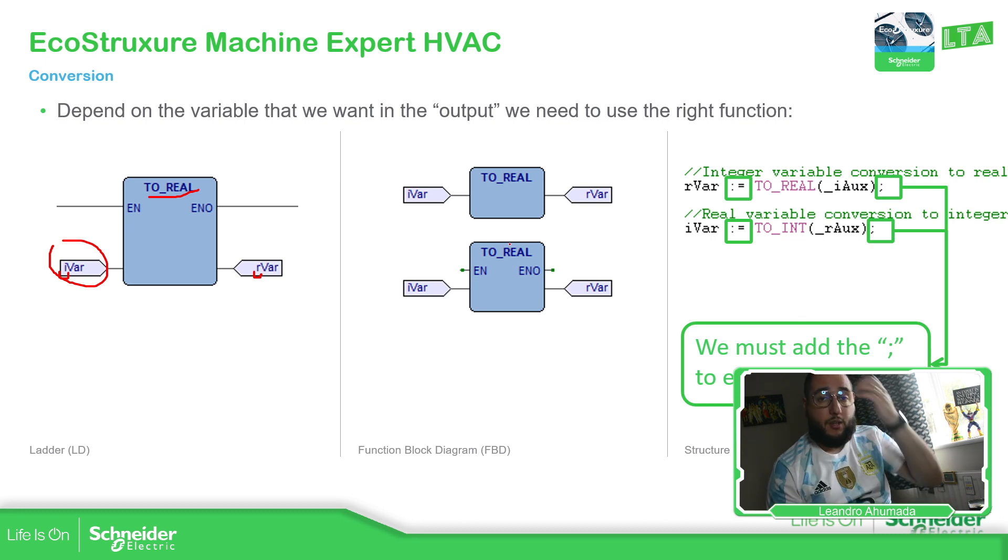For the FBD is similar. It's exactly the same as the ladder, but you have the possibility to use enable input and output. It's the same. Just need to make sure that the value here int is going to be converted to real because it's the one that I have the same from here. It's an int. And I'm going to convert it to real. And this is important because later when we are seeing, for example, arithmetics. When we do the calculation, we need to use the same data type. And that is important to know conversions.